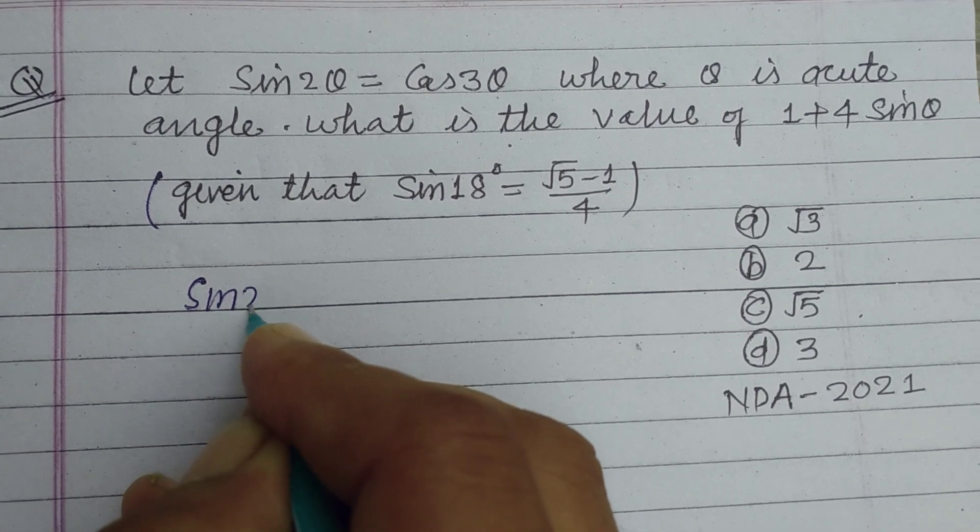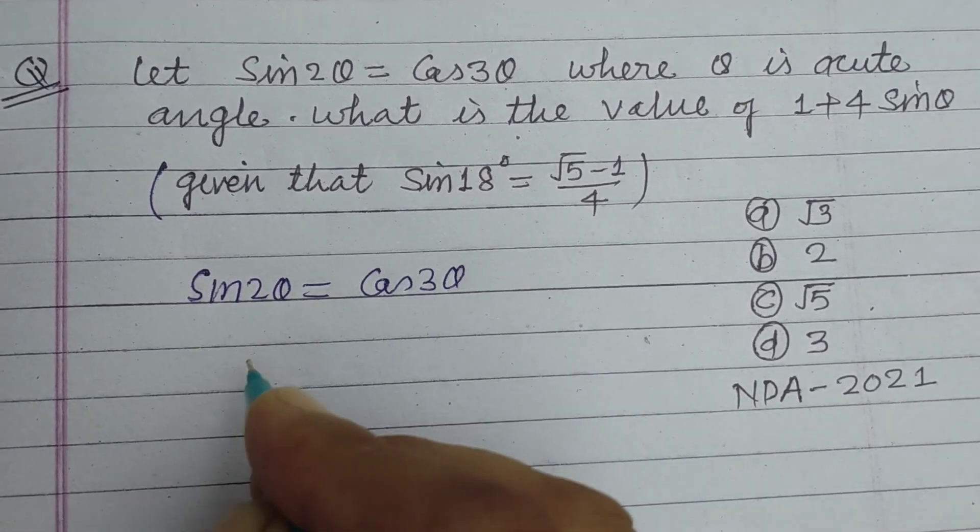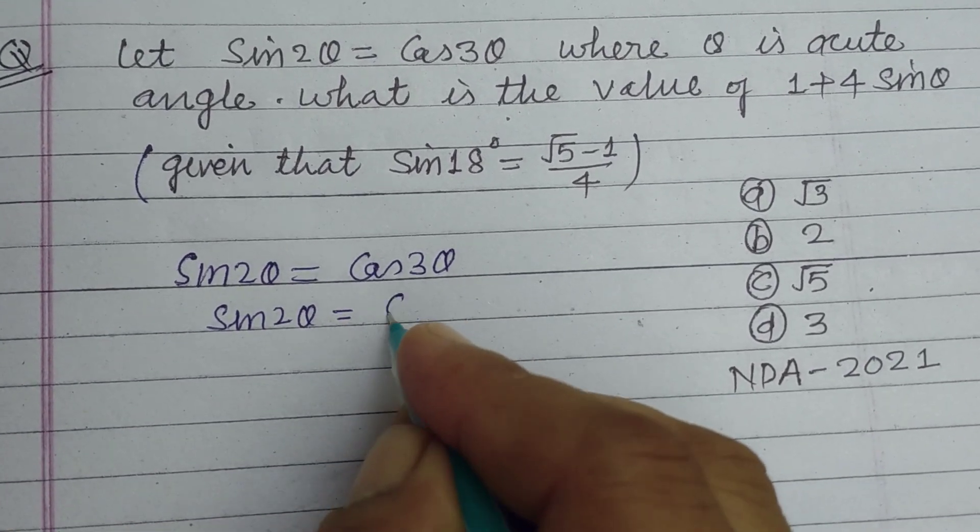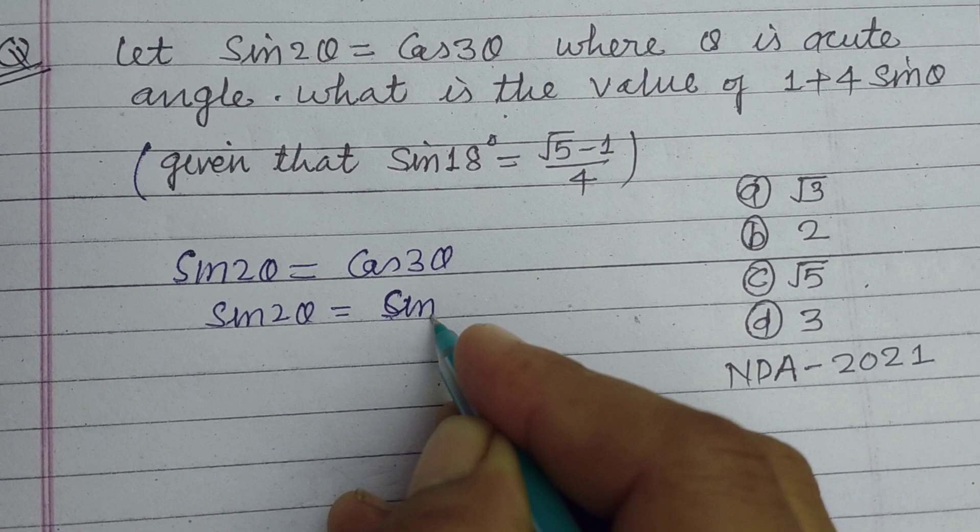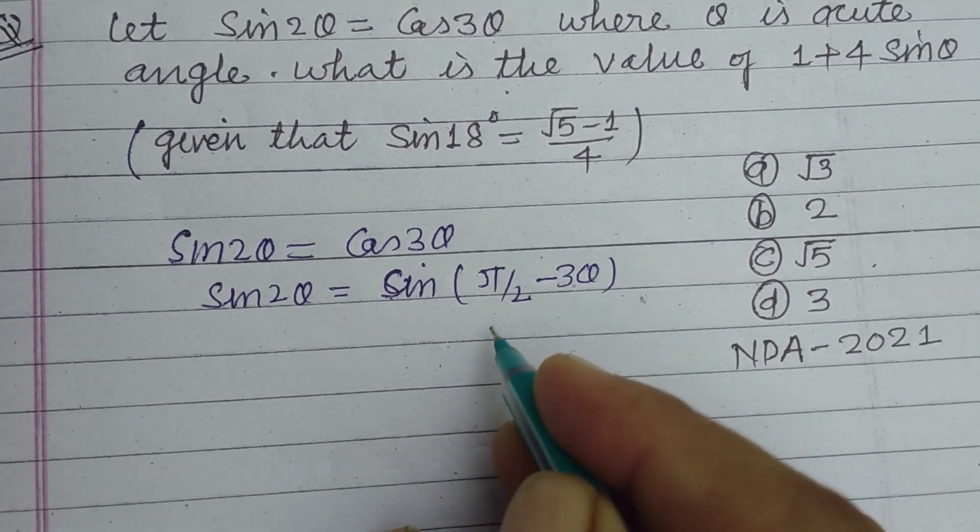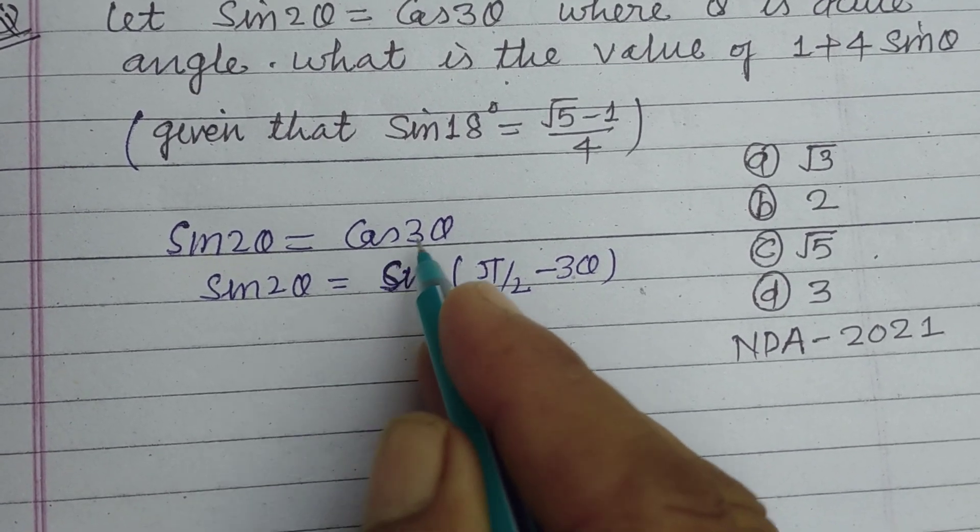Student, here sin 2θ equals cos 3θ. We write cos 3θ as sin of pi by 2 minus 3θ, since sin of pi by 2 minus θ equals cos θ.